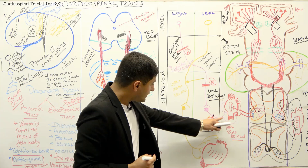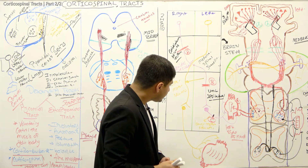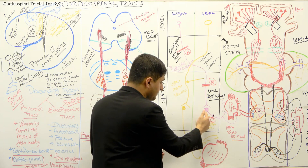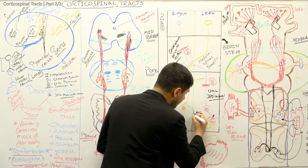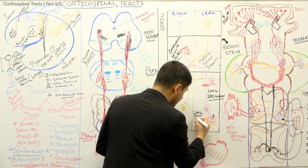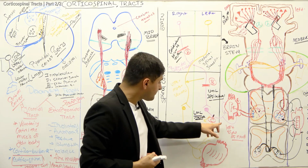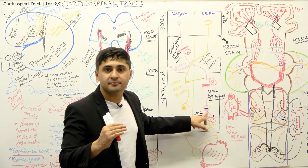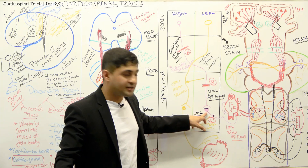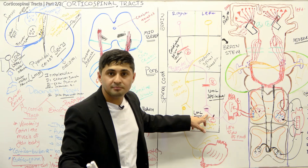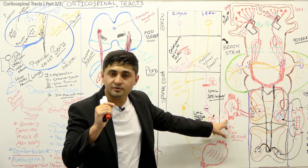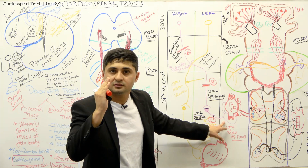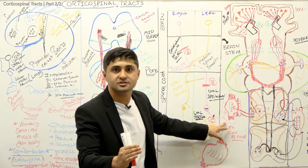If there's a lesion at level C — at the lower motor neuron itself — this is a lower motor neuron lesion. It will be ipsilateral and at the level of the lesion, not below it, because the lower motor neuron directly innervates that specific muscle. If both upper and lower motor neurons are damaged, neither will supply the muscles below.